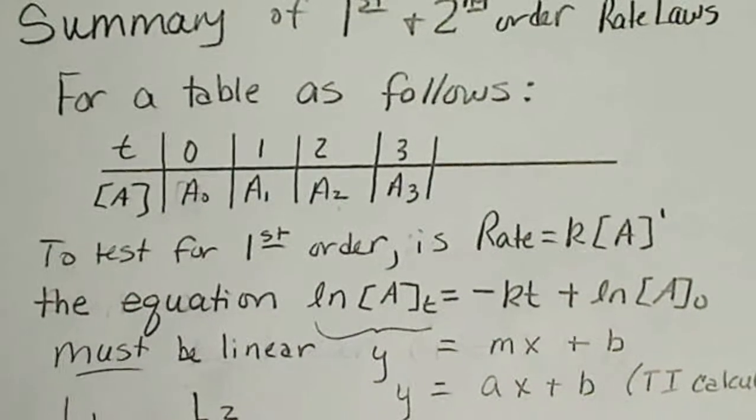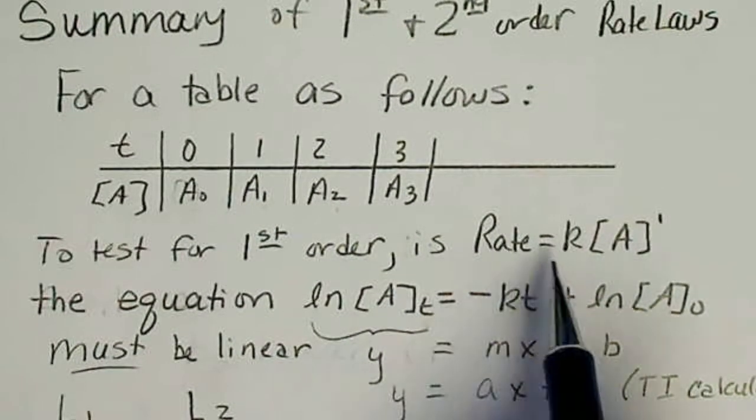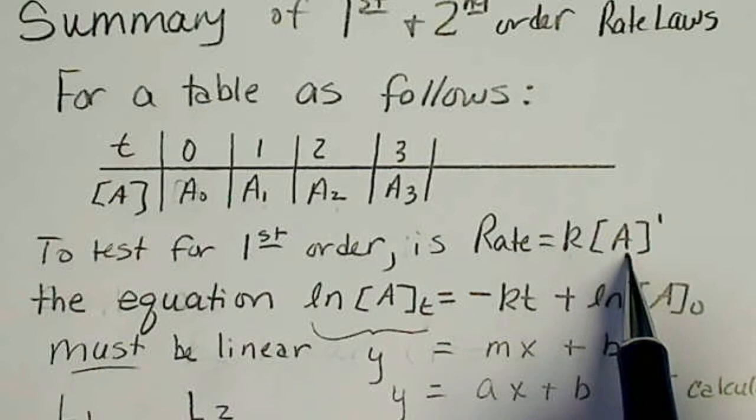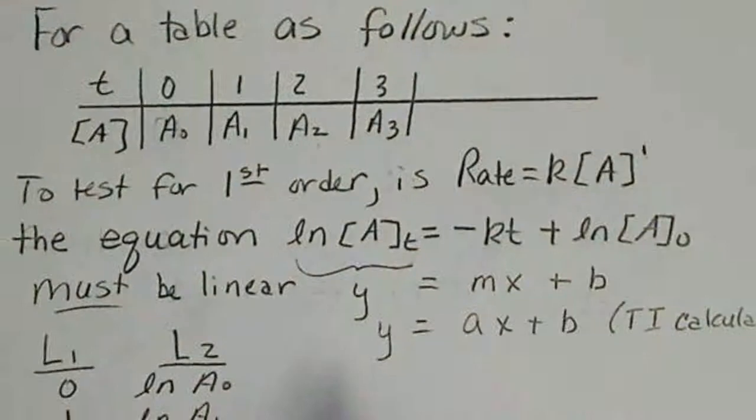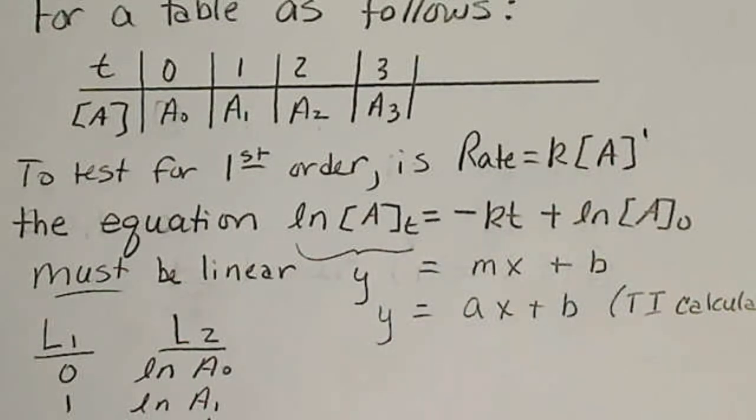So to test for first-order, to see if the rate is equal to the rate constant times A to the first power, the equation below has to be linear.